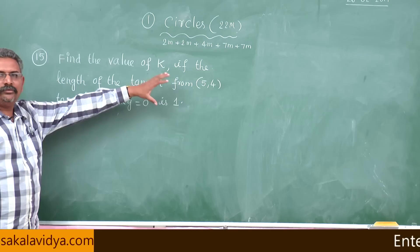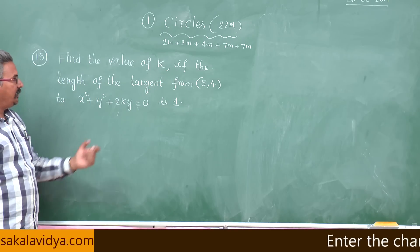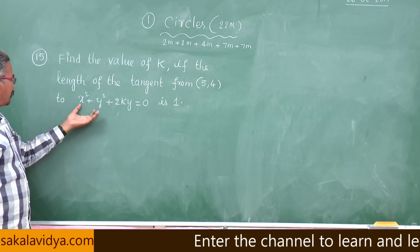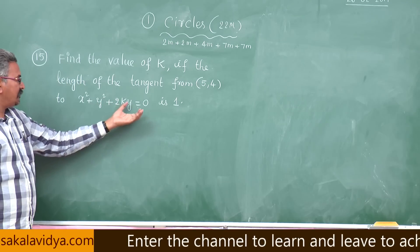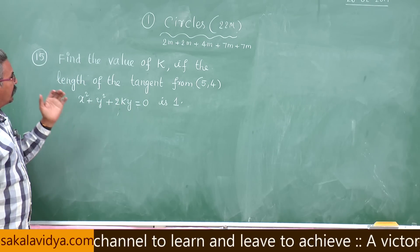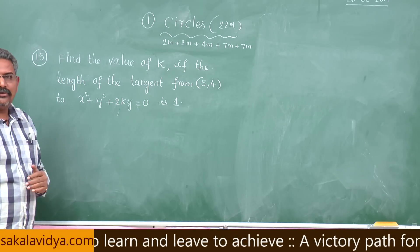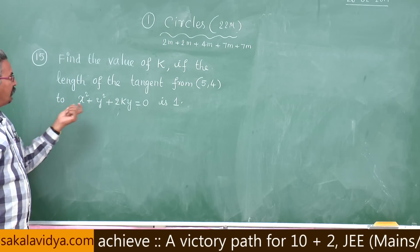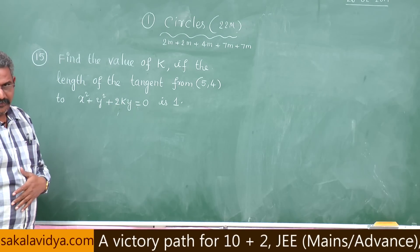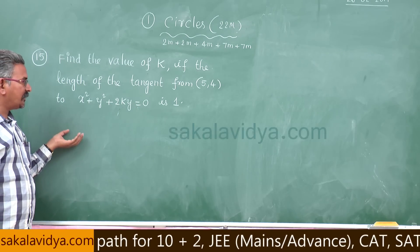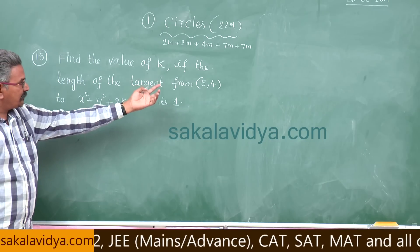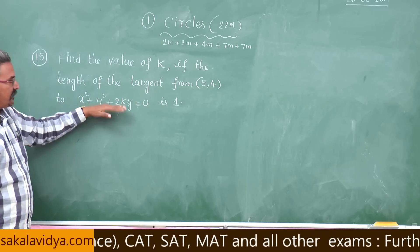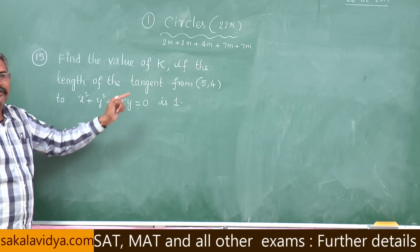15th question: find the value of K if the length of the tangent from (5,4) to x² + y² + 2Ky = 0 is 1. The length of the tangent is drawn from (5,4) to the circle x² + y² + 2Ky = 0 and equals 1. Using √S₁₁ = 1, squaring gives S₁₁ = 1. Substitute x=5, y=4 into the equation and equate to 1.